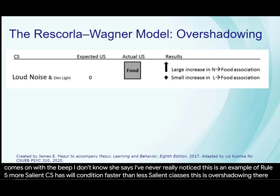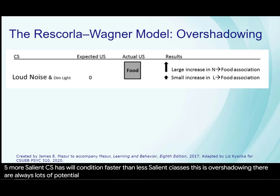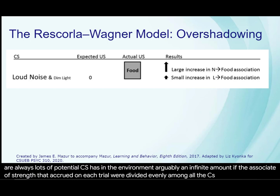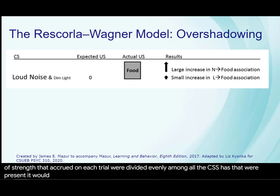There are always lots of potential CSs in the environment — arguably an infinite amount. If the associative strength that accrued on each trial were divided evenly among all the CSs that were present, it would always take an infinitely long time for conditioning to occur.